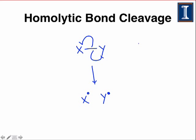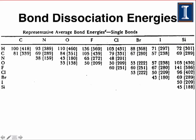Contrast this with the more common heterolytic bond cleavage, which gives both electrons in the bond to the more electronegative heteroatom typically involved. A lone pair results on X, and a cation results on Y. The ability of a particular bond to break homolytically depends on its bond dissociation energy.